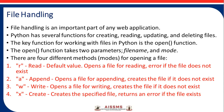The key function for working with files in Python is the open() function. The open() function takes two parameters: the first one is the file name and the next is the mode. There are four different methods or modes for opening a file. The first one is R for read, which is the default value — it opens a file for reading, and gives an error if the file does not exist.